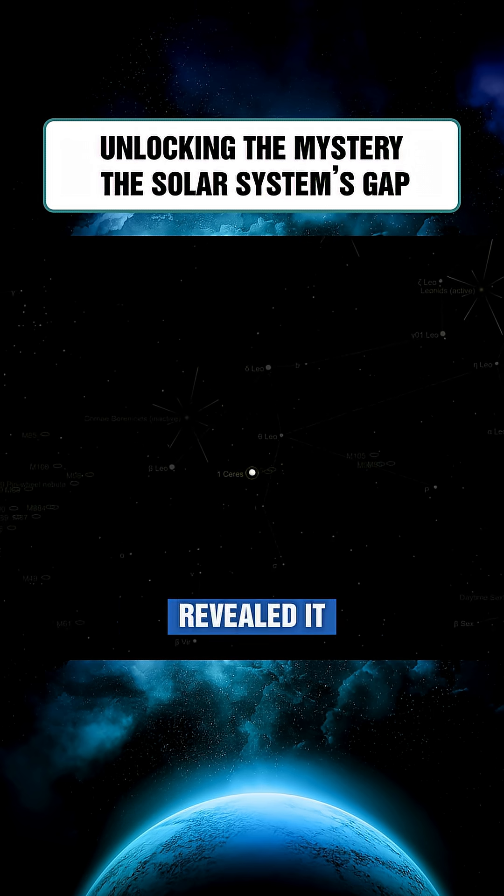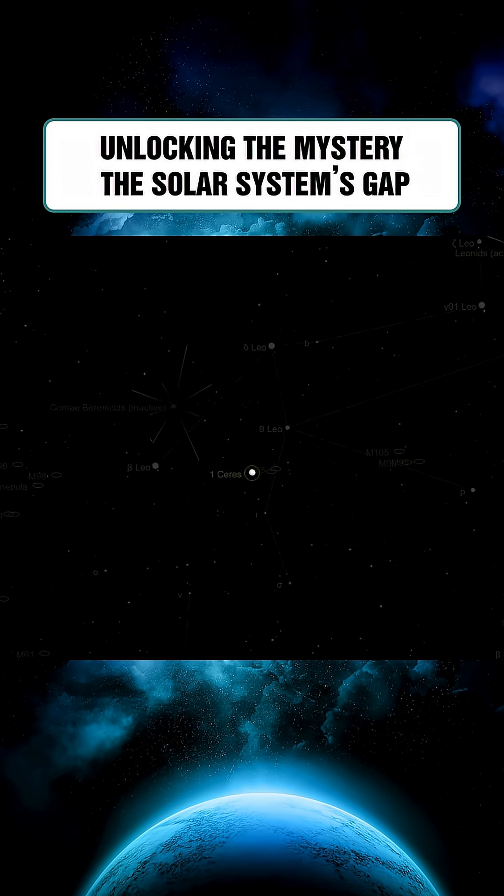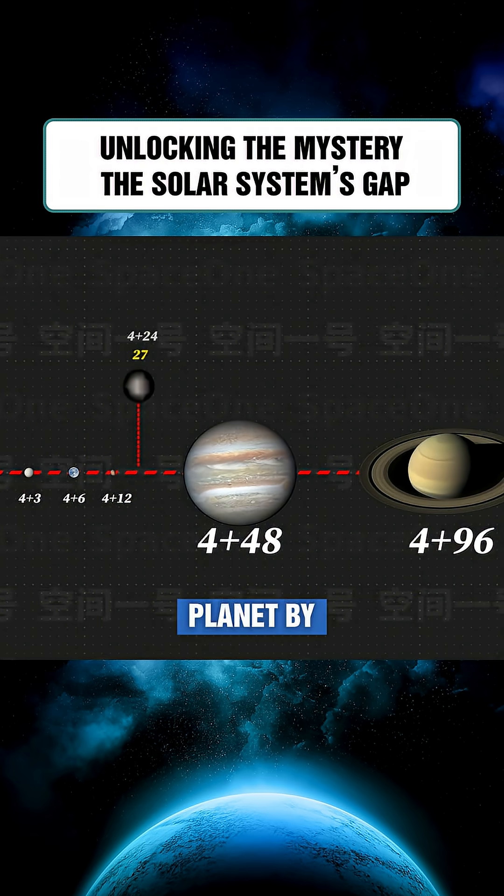Closer inspection revealed it was unexpectedly small. Its true diameter was only about 940 kilometers. Despite its size, Ceres is spherical and orbits the sun, making it a dwarf planet by later classification.